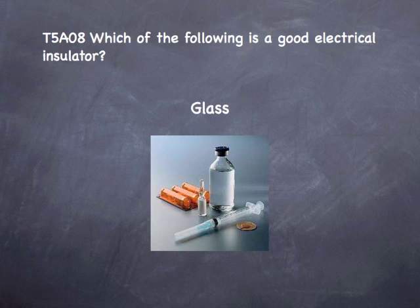This question is: which of the following is a good electrical insulator? I thought of insulator and I thought of insulin. Insulator, insulin — what does insulin come in? It usually comes in a glass bottle. So: insulator, insulin, glass bottle. That's how I associated this question.